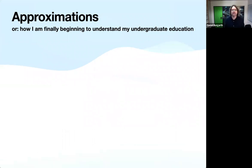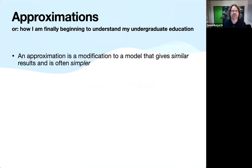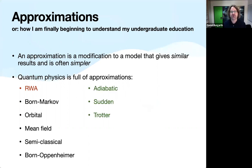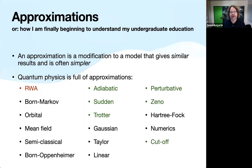I want to start more generally by talking about approximations — or how I'm finally beginning to understand my own undergraduate, because frankly there was a lot I didn't understand. What is an approximation? In my mind, an approximation is a modification to a model that should give similar results and hopefully be simpler, because otherwise what's the point? Physics is full of approximations, and the rotating wave approximation is today's subject, but the list really goes on and on.